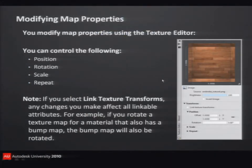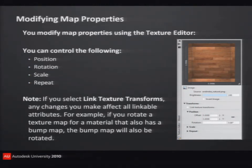So let's look at some things we can modify in here. I can change the position, I can change the rotation, I can change the scale. That's something you're probably going to find yourself doing a lot. If the material is too big or too small, you just go in and change the scale of the material. And you can also set how that material repeats.